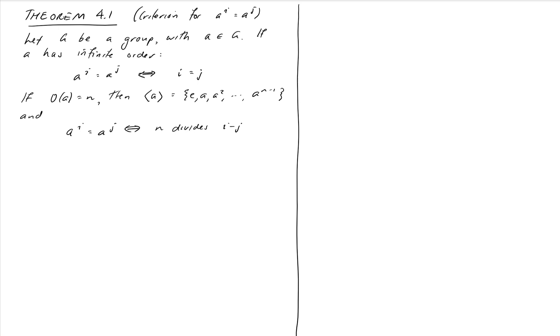Welcome back. This video is a quick addendum to the previous one. We spent quite a lot of time on Theorem 4.1, essentially proving this thing, which is a relatively straightforward theorem about when it is that a to the i can be equal to a to the j.